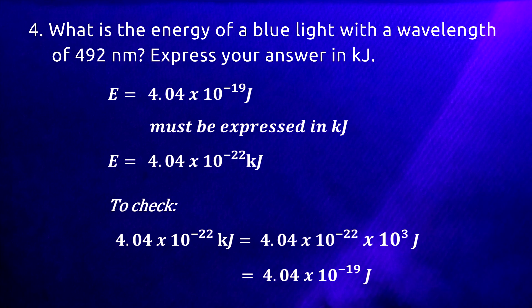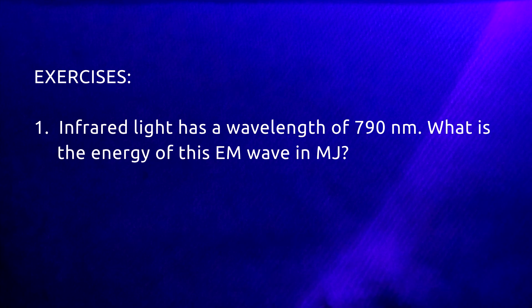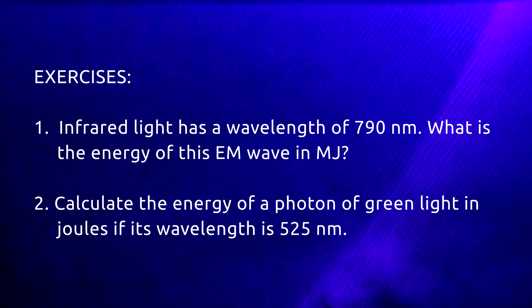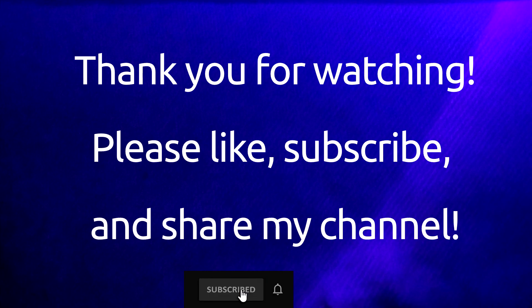For your practice, please answer the following problems. First, infrared light has a wavelength of 790 nanometers — what is the energy of this EM wave in megajoules? Second, calculate the energy of a photon of green light in joules if its wavelength is 525 nanometers. I hope this lesson helps you in answering problems like these. See you for our next lesson.